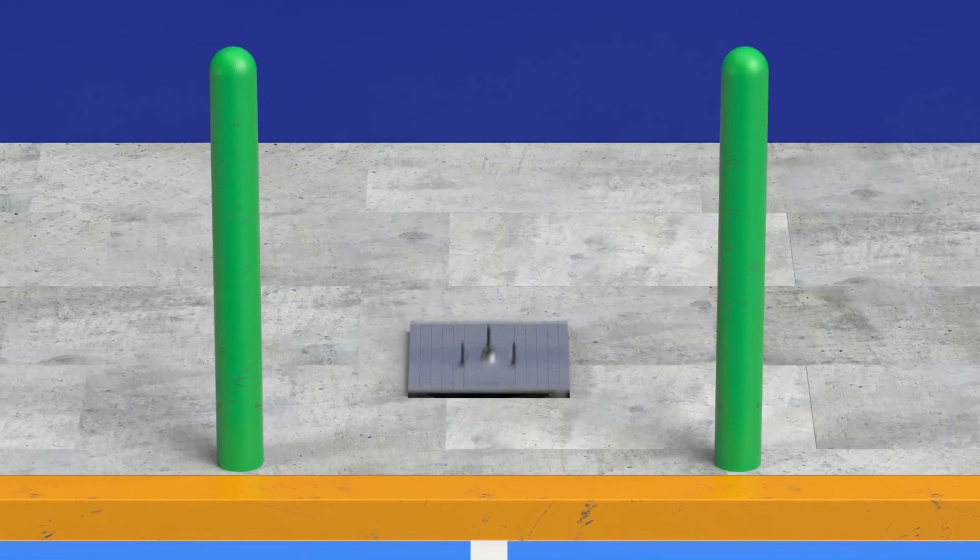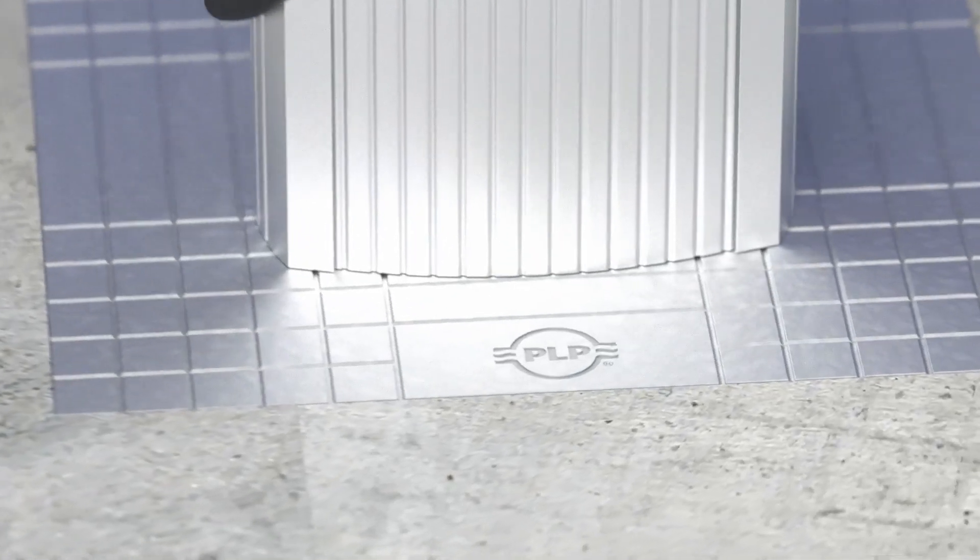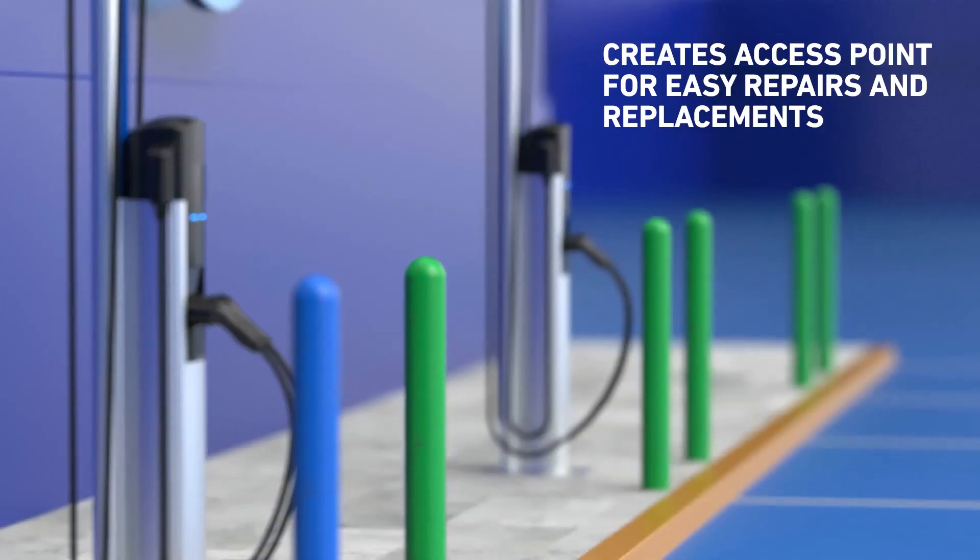The universal cast aluminum top plate accommodates all level 2 chargers and charger pedestals and creates a convenient access point that makes future repairs and replacements easy.